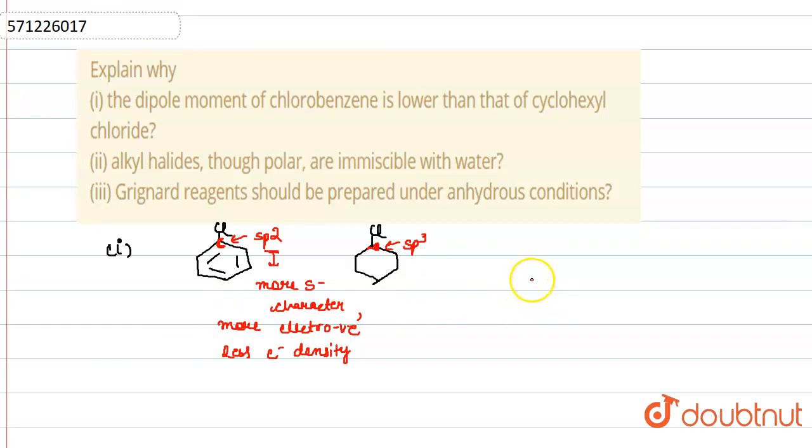And the second reason is, when we draw the resonating structures of chlorobenzene ring, then we observe during drawing their resonating structure, this electron cloud reaches here and further change in dipole moment takes place due to which here a partial double bond character appears.